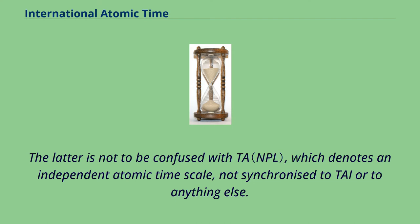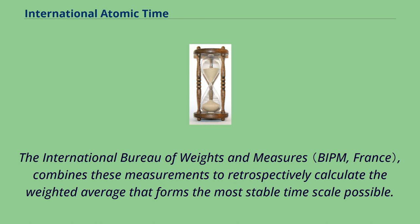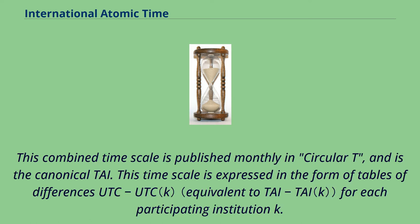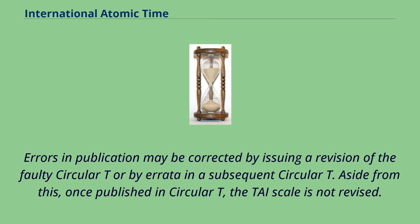The latter is not to be confused with TA, which denotes an independent atomic timescale, not synchronized to TAI or to anything else. The clocks at different institutions are regularly compared against each other. The International Bureau of Weights and Measures combines these measurements to retrospectively calculate the weighted average that forms the most stable timescale possible. This combined timescale is published monthly in Circular T and is the canonical TAI. This timescale is expressed in the form of tables of differences UTC minus UTC(k) for each participating institution K. The same circular also gives tables of TAI minus TA for the various unsynchronized atomic timescales.